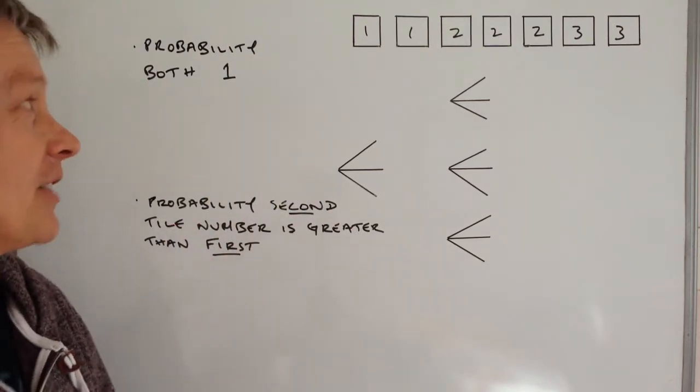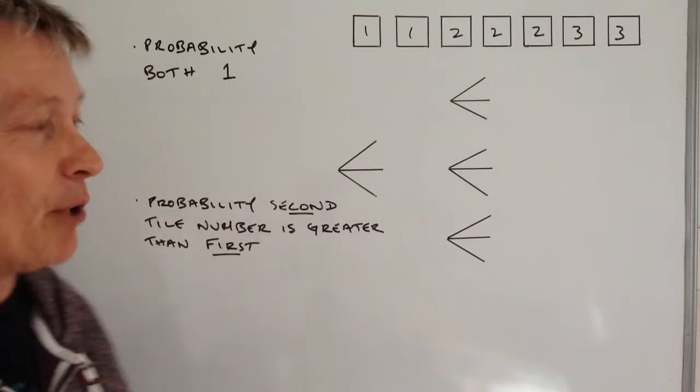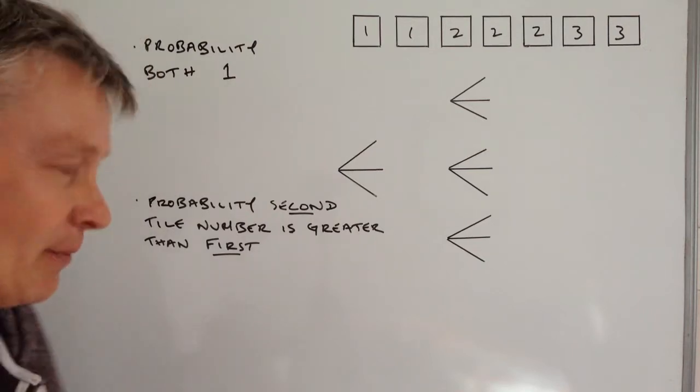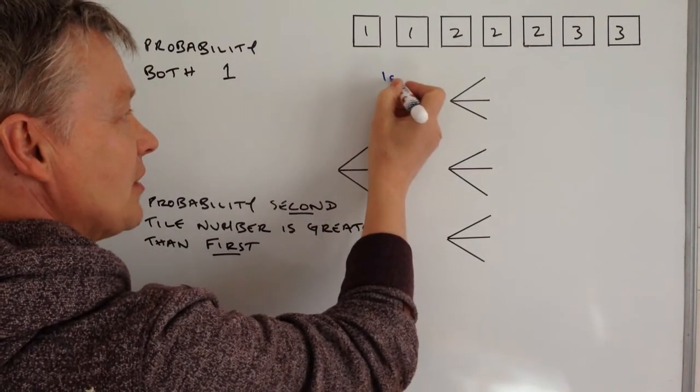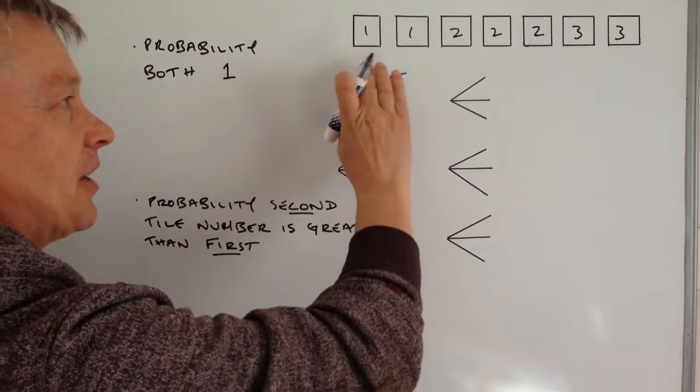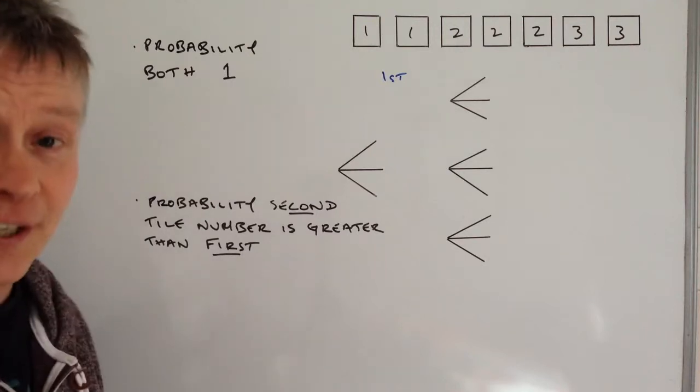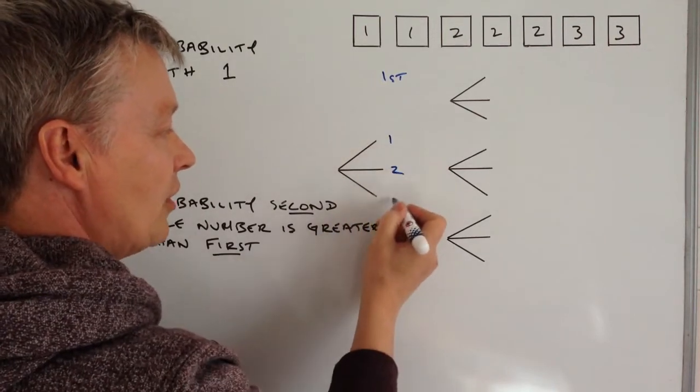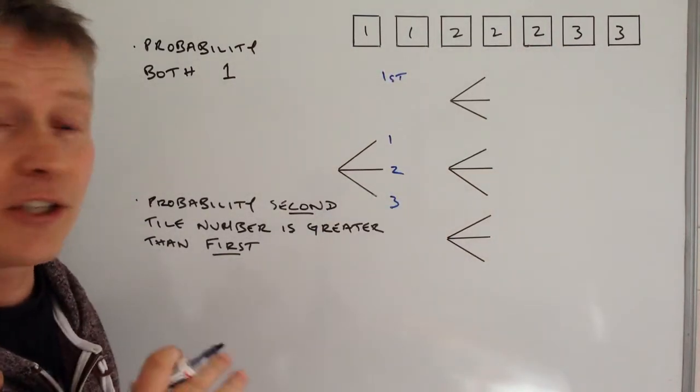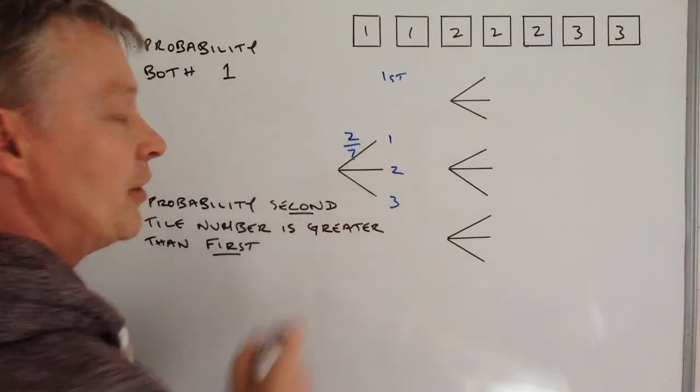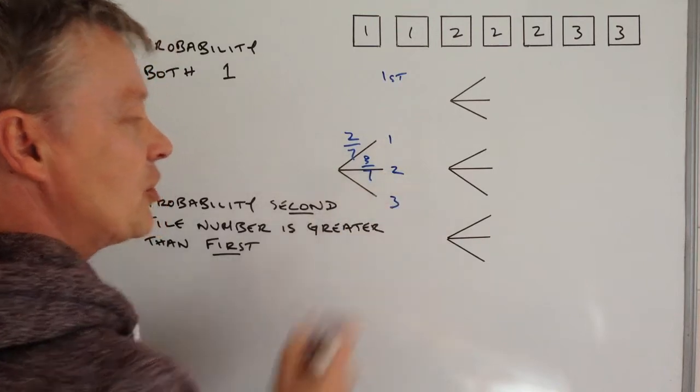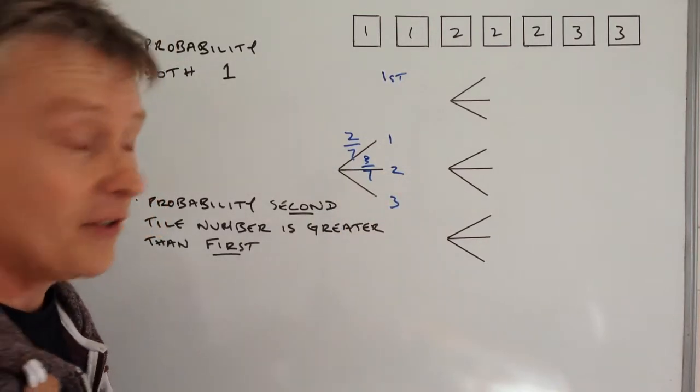The first one is: what's the probability that both tiles will be drawn as one? Well let's just have a look at the probability. Remember I was saying that you've got two picks, the first pick. This particular chap puts all of these tiles into a bag and he's got numbers one, two, and three - of which out of the seven tiles he's got, he's got two out of the seven are number one, three out of the seven are number two, and two out of the seven are number three.